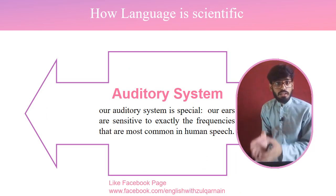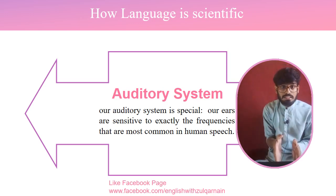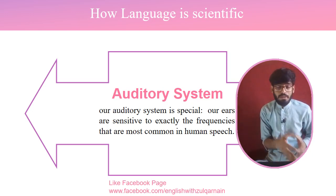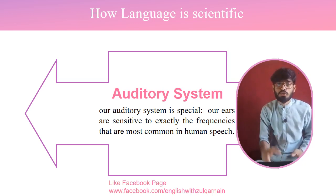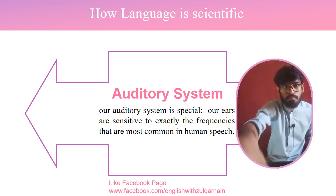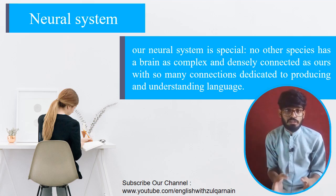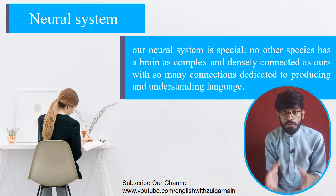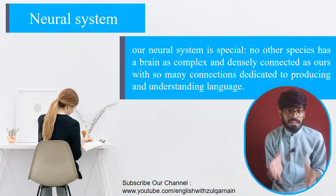The second system is the auditory system, which helps us perceive and listen to language. Our ears are sensitive to exactly the frequencies most common in human speech. Many species have a similar auditory system pattern, but human newborn babies pay special attention to human sounds. The most important system is the neural system, which is related to neurolinguistics — the study of language with respect to the brain.